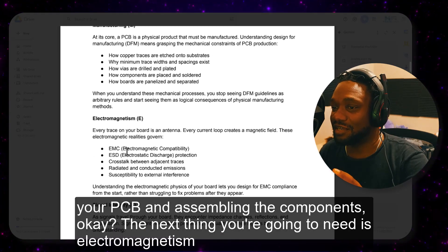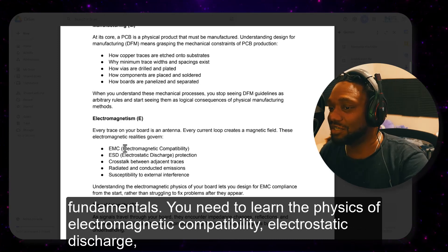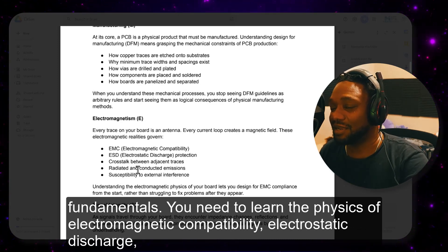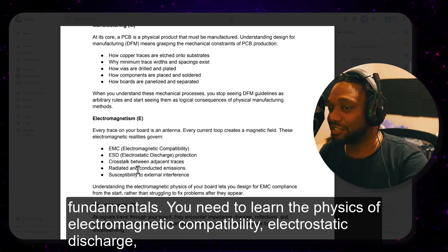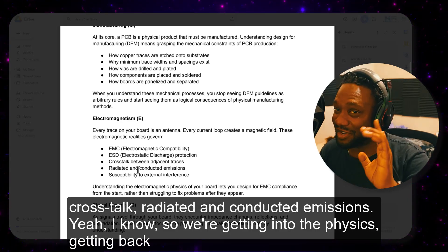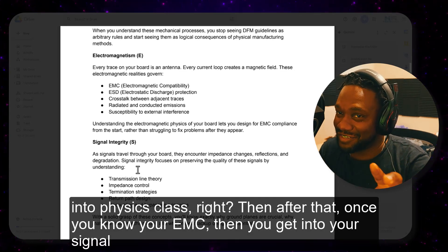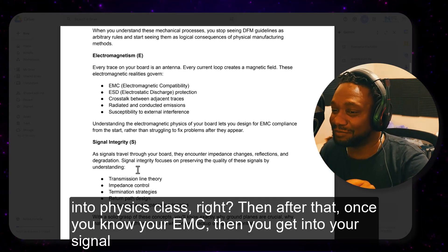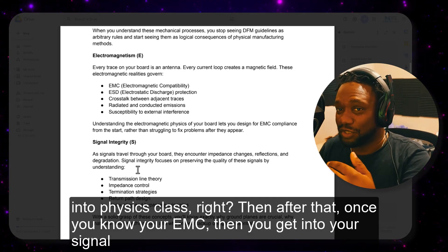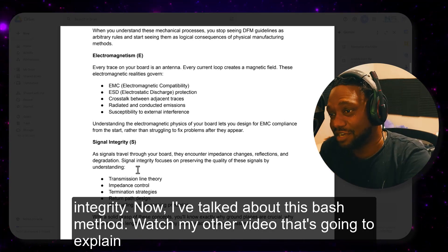The next thing you're going to need is electromagnetism fundamentals. You need to learn the physics of electromagnetic compatibility, electrostatic discharge, crosstalk, and radiated and conducted emissions. We're getting back into physics class. Then after that, once you know your EMC, you get into signal integrity.